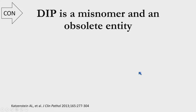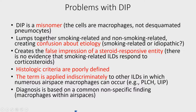My take is that DIP is a misnomer — there is absolute agreement among everybody that DIP is a misnomer, as nothing is desquamated in it. I feel it's also an obsolete entity, supported by Dr. Katzenstein's paper in Journal of Clinical Pathology. The problems with DIP are many: it's a misnomer; it lumps together clearly smoking-related entities with non-smoking-related ones; it causes the false impression that it's steroid-responsive, which has never been demonstrated; the histologic criteria are poorly defined and applied indiscriminately — you just need to see a couple of macrophages. It's based on a very common, non-specific finding: macrophages.